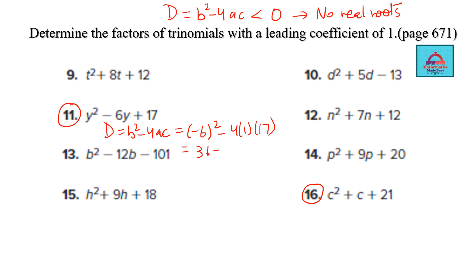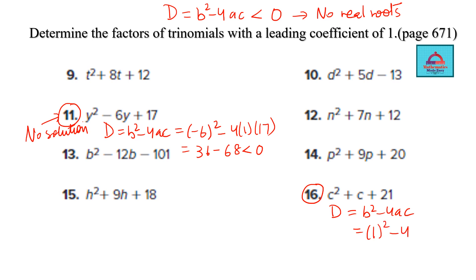The same process applies to question 16: compute b² − 4ac. The result is negative, so again no real roots or no solution. You'll need to check the discriminant for some equations; for others, middle term splitting will work directly.